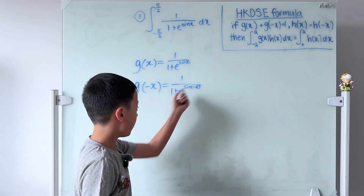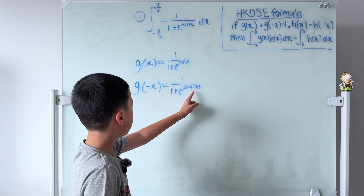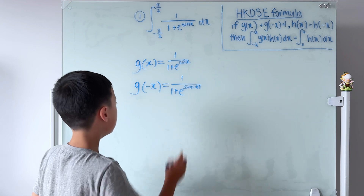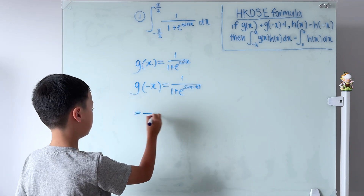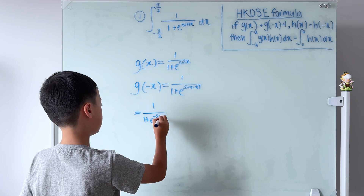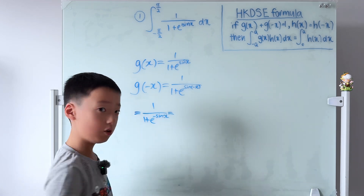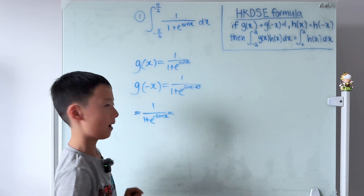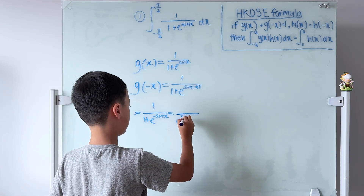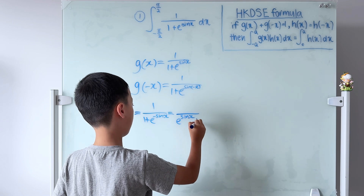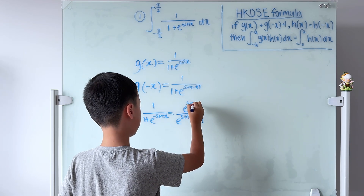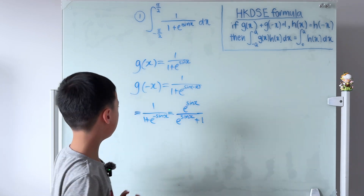Since sin is an odd function, sin(−x) = −sin x. So g(−x) = 1/(1 + e^(−sin x)). If we multiply e^(sin x) on the top and bottom, it becomes e^(sin x) on the top and (e^(sin x) + 1) on the bottom.